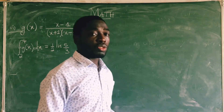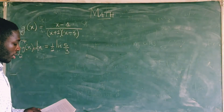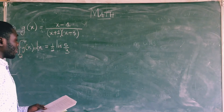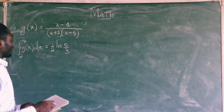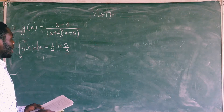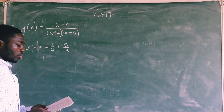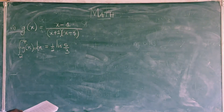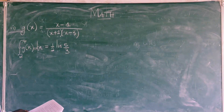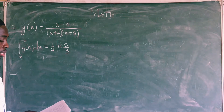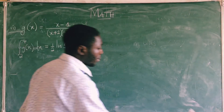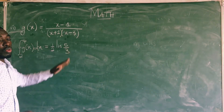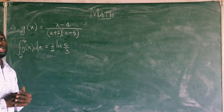I am going to read a question which involves written functions. The first question says: express g of x equal to x minus 1 over x plus 1 times x minus 3 into partial fractions, and hence show that the integral from 2 to 4 of g of x with respect to x is equal to half ln 5 over 3. The first thing we have to do is to express this in partial fractions.